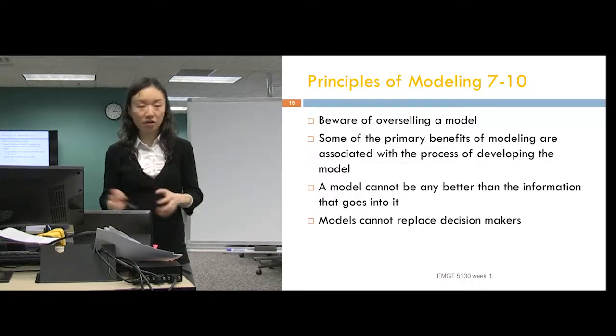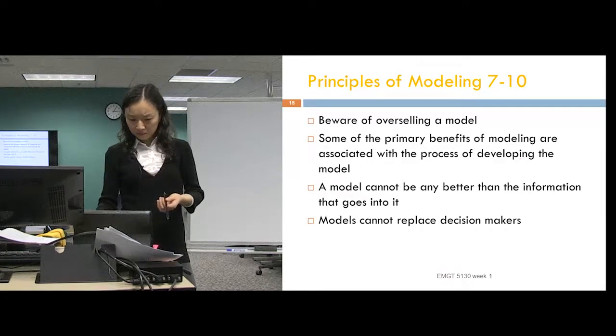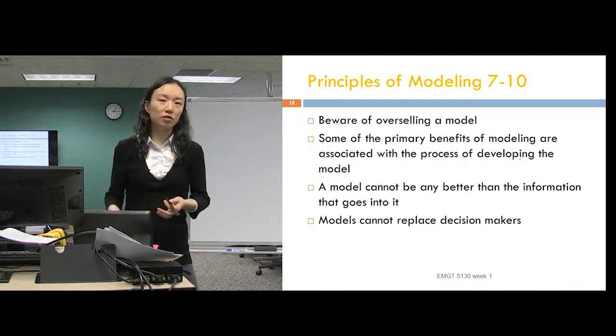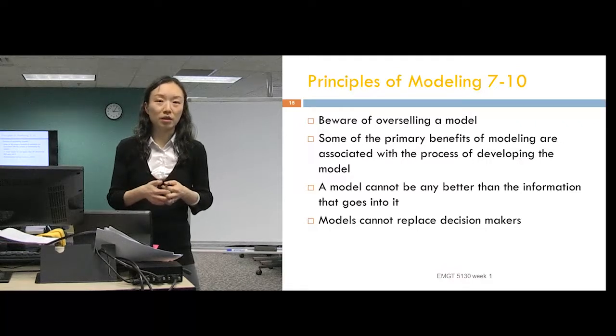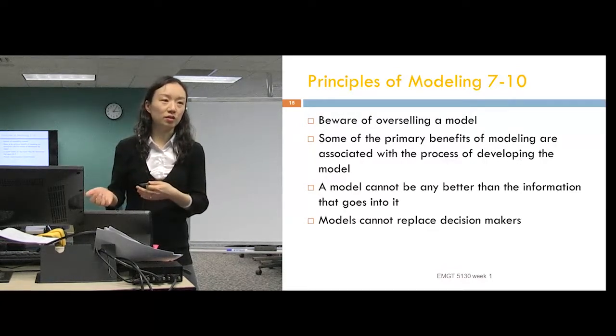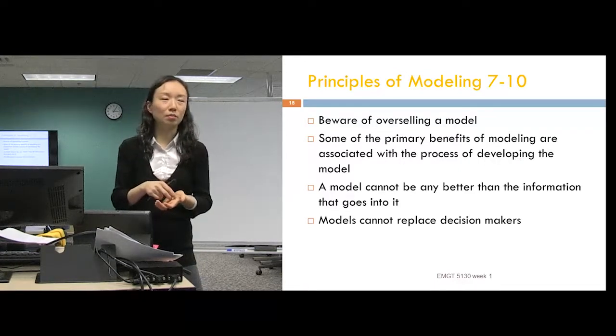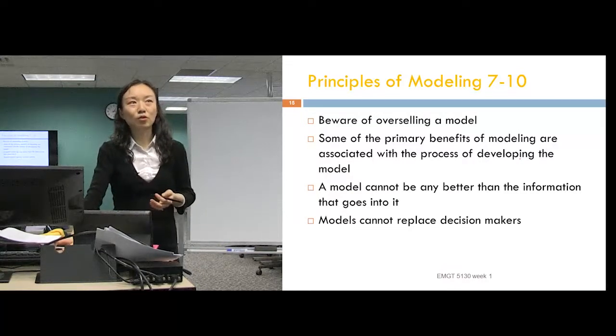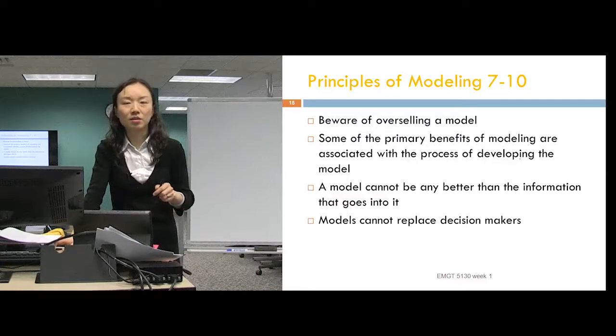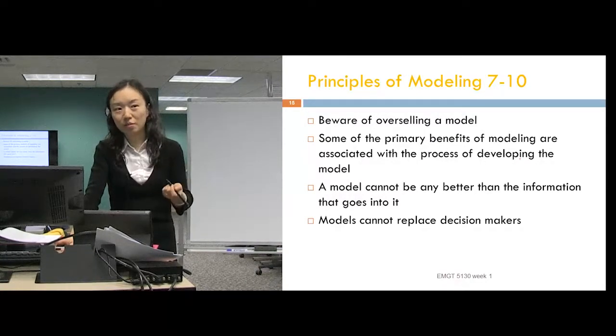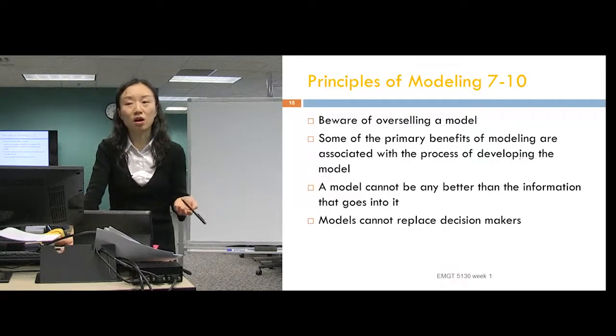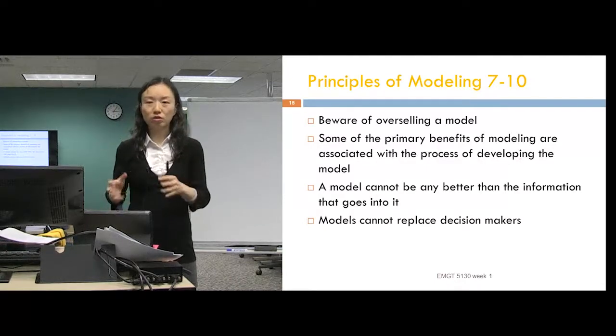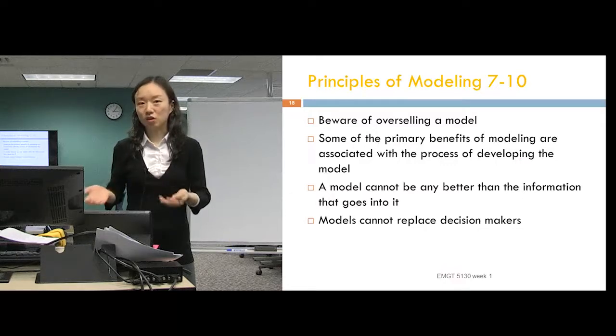As mentioned, some of the primary benefits are associated with the thinking process. A model cannot be any better than the information. Finally, models cannot replace the decision makers. So even what the model, the OR model suggests, we should go this way, the decision maker may not decide to go this way because of certain situations. And not everything can be incorporated into the model. There is something maybe not quantifiable, which is important. For example, customer satisfaction. So when you model a situation where the cost is minimized, but it hurt customer satisfaction, the company may not decide to go the way that minimizes the cost because customer satisfaction is more important. And it's hard to quantify the dollar amount. So the model results just give the company something to base their decision on.